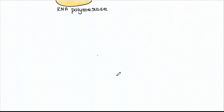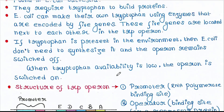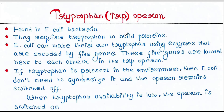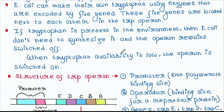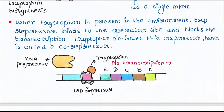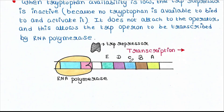In our last lecture, we already talked about the tryptophan operon, or trp operon, and we saw how a repressor works in this system. We know that if tryptophan is present in the bacterial media, they do not need to synthesize it and the operon is off. If tryptophan is absent in the media, they need to synthesize it to construct proteins, and the operon is on.